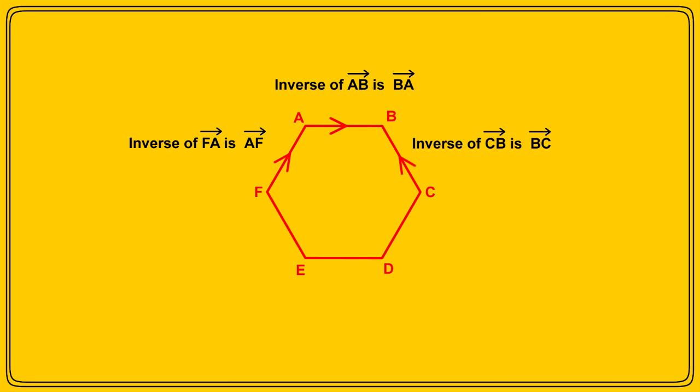Now, having said that, we sometimes keep the letters in the same order and put a negative sign in front, just as we do when we use lowercase letters. So we could refer to the inverse of vector AB as minus AB, if we wish. It just depends on the situation, and you will soon see when to reverse the letters and when to use a negative sign.